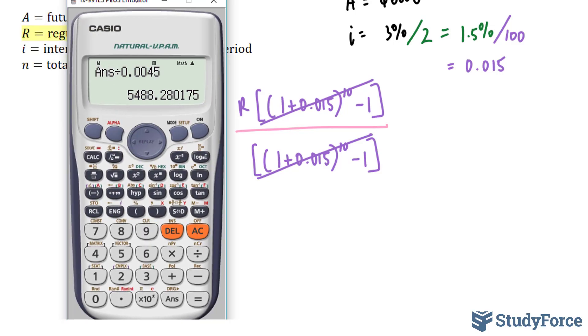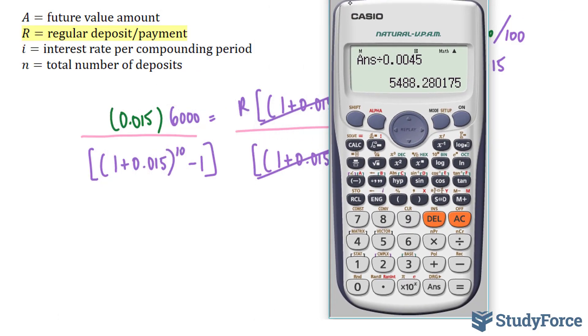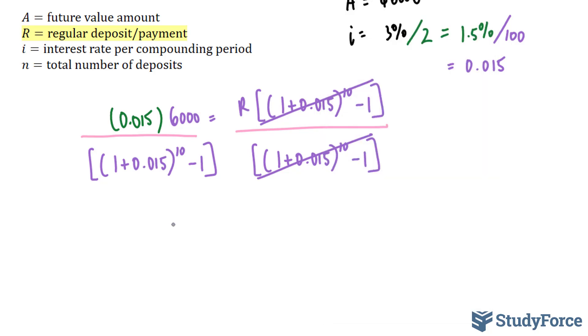We're going to use our calculator now. And by evaluating the left side, we will get our R value, our regular deposit. So, 0.015 times 6,000, which represents the numerator, divided by the square bracket, which is represented by this bracket, this bracket, which is represented by that one, 1 plus 0.015 to the power of 10 minus 1. And this gives us $560.60.